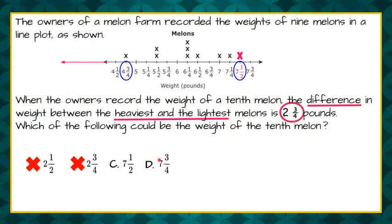But let's check D just to be sure. So now we're going to add D, which would be the seven and three-fourths, which would be our heaviest. And we can see that four and three-fourths to seven and three-fourths, they're both having a fraction of three-fourths. So we go from four to seven, and that's a jump of three, which is greater than two and three-fourths. So we know it's not choice D, and I'm confident in my choice C. So our tenth melon, if it was seven and one-half pounds, that would provide a difference of two and three-fourths pounds from the lightest melon to the heaviest melon.